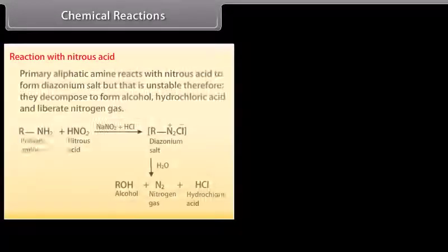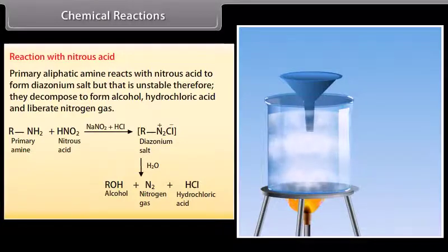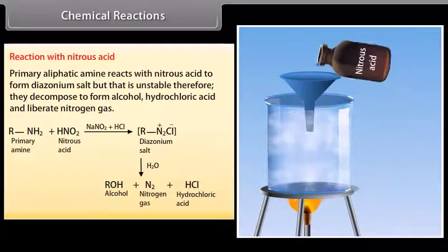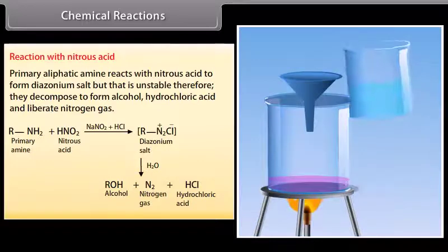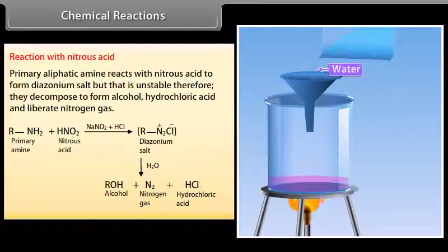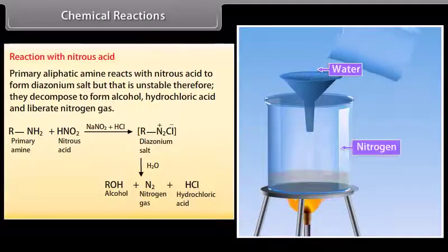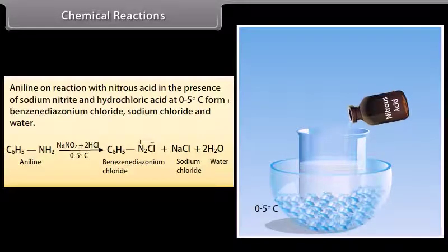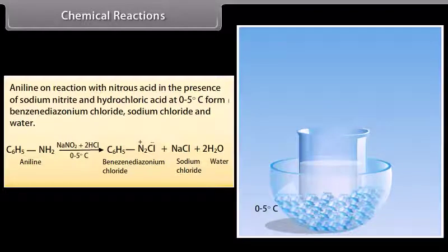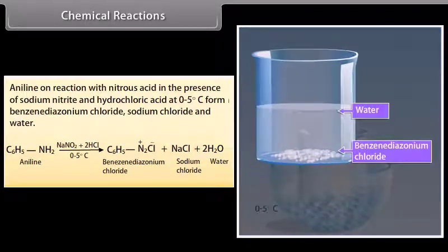Reaction with nitrous acid: Primary aliphatic amines react with nitrous acid to form diazonium salts, which are unstable and decompose to form alcohol, hydrochloric acid, and nitrogen gas. Aniline on reaction with nitrous acid in the presence of sodium nitrite and hydrochloric acid at 0–5°C forms benzene diazonium chloride, sodium chloride, and water.